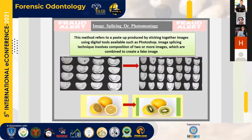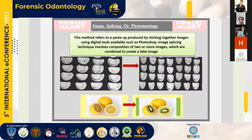The second method of digital imaging fraudulence is image splicing or photo montage. This method refers to a pastiche produced by sticking together images using digital tools such as Photoshop. Image splicing involves the composition of two or more images which are combined to create a fake image. We can understand this better with a day-to-day example — like in the photo shown, how two fruits, lemon and kiwi, have been combined to produce one single fruit in the image.